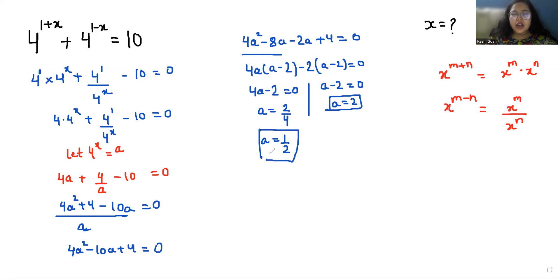So as we know, we took a substitution. So 4^x equals a. So 4^x equals 1/2. 4 we can write as 2^2, whole power x, and 1/2 we can write as 2^(-1). So it becomes 2^(-1).